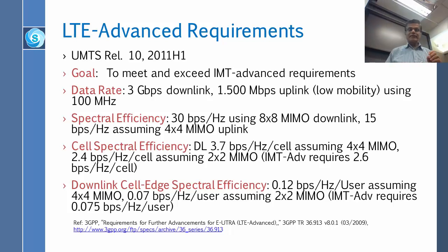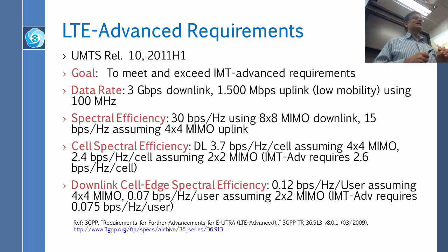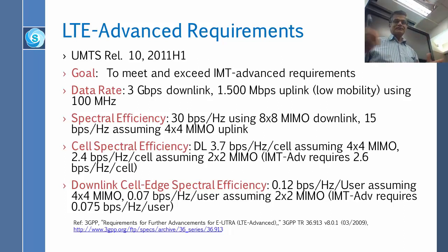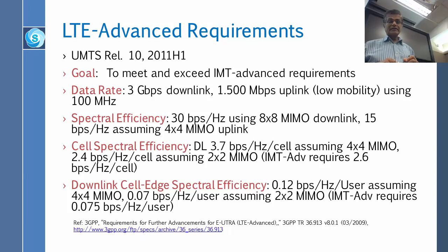The goal was to meet or exceed IMT Advanced requirements, and they basically did. LTE Advanced can produce 3 Gbps on the downlink and 1.5 Gbps on the uplink at low mobility using 100 MHz. For spectral efficiency, instead of the required 16 they are able to get 30 bits per hertz using 8×8 MIMO in the downlink, and 15 bits per hertz using 4×4 MIMO in the uplink.